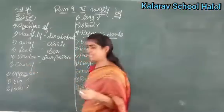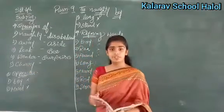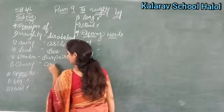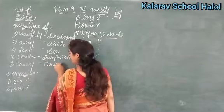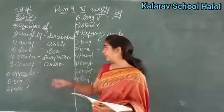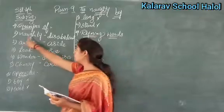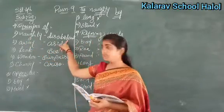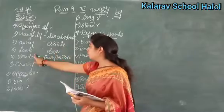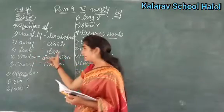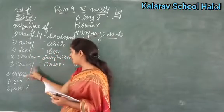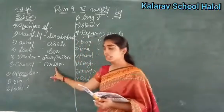Now the last number. It is given: cherry. So for cherry, what will you use? Cherry eyes. Okay? Clear up to this. Let's see from the beginning: naughty — disobedient; away — far; look — see; wonder — surprise; cherry — cherries. Okay? Clear.